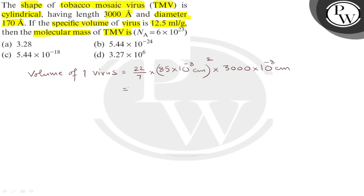Now we calculate: 22 into 85 squared into 3000 divided by 7, into 10 raise to minus 8 squared — that is 10 raise to minus 16 — and then again multiplied by 10 raise to minus 8, giving a total of 10 raise to minus 24 centimeter cube.